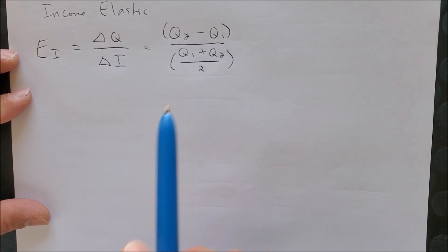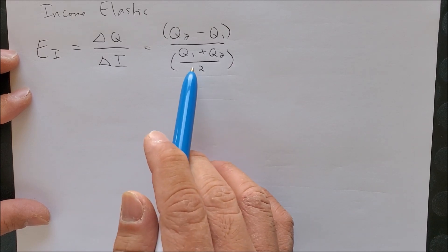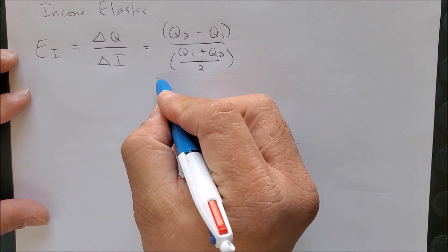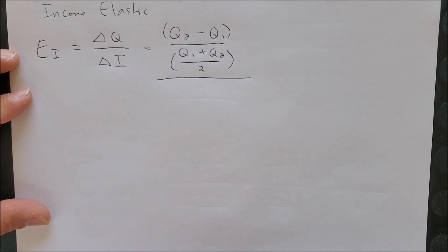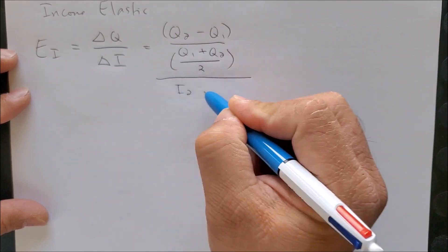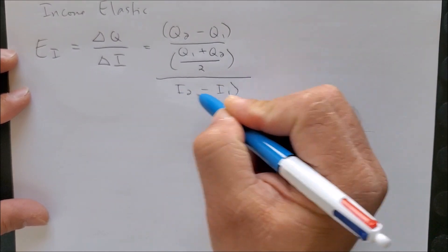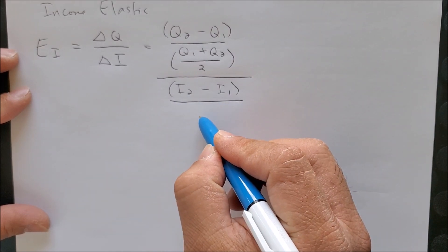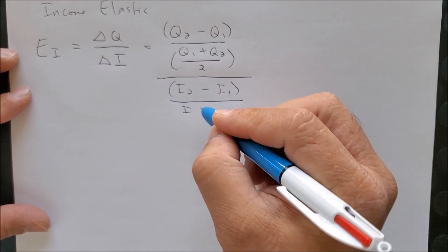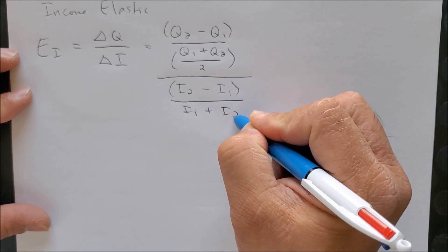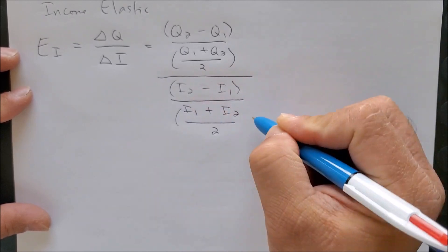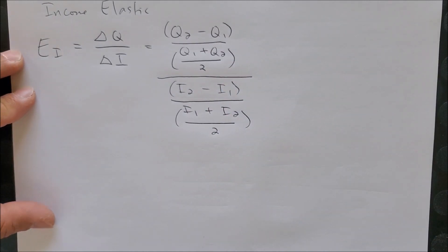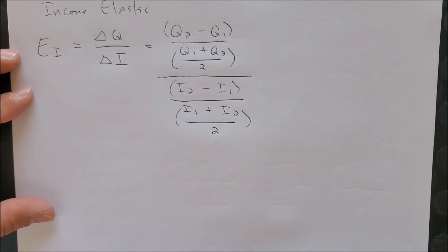If this is true for the change in Q, it must be true for the change in I. Again we have the change I2 minus I1, but instead of having I1 now we're going to use the average of both incomes. And this is what we call the midpoint equation.